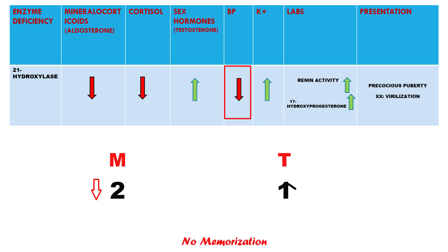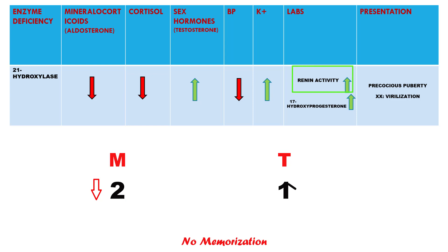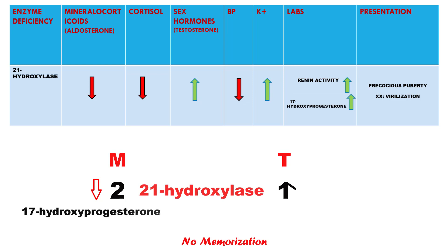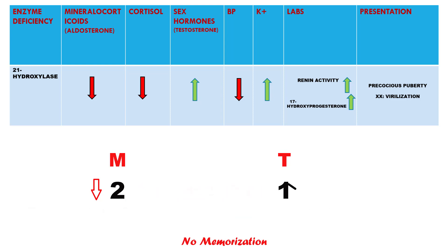Blood pressure will be low with less mineralocorticoid activity — no sodium retention, so lower blood pressure. No potassium excretion, so potassium level will go up. Now the lab findings: as there is no aldosterone activity, renin activity will obviously increase to compensate. As 21-hydroxylase converts 17-hydroxyprogesterone to 11-deoxycortisol, lack of that enzyme will increase 17-hydroxyprogesterone. This is not super important to remember but may appear on your exam.